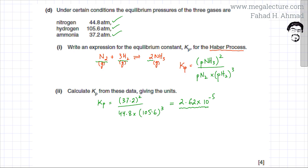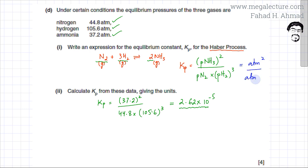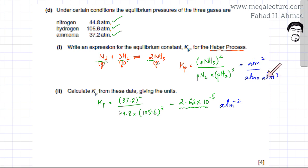To find the units, since all pressure values are in atmospheres, substitute atmospheres into the Kp expression: atmospheres squared divided by atmospheres multiplied by atmospheres cubed. Simplifying, atm² in the numerator and atm⁴ in the denominator gives atmospheres to the power of minus 2 (atm⁻²).